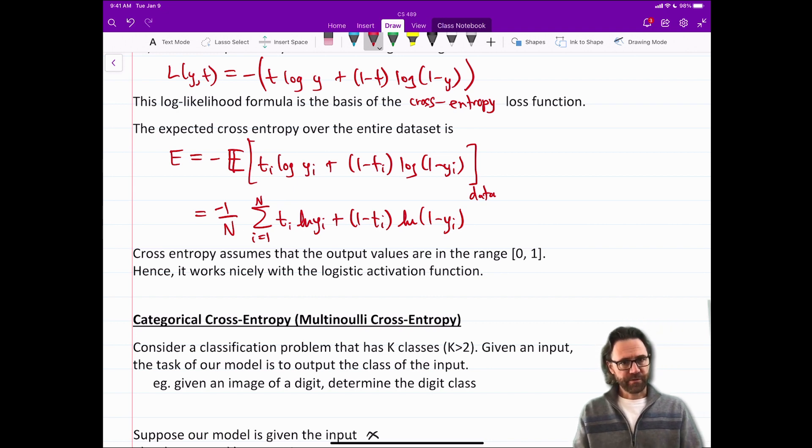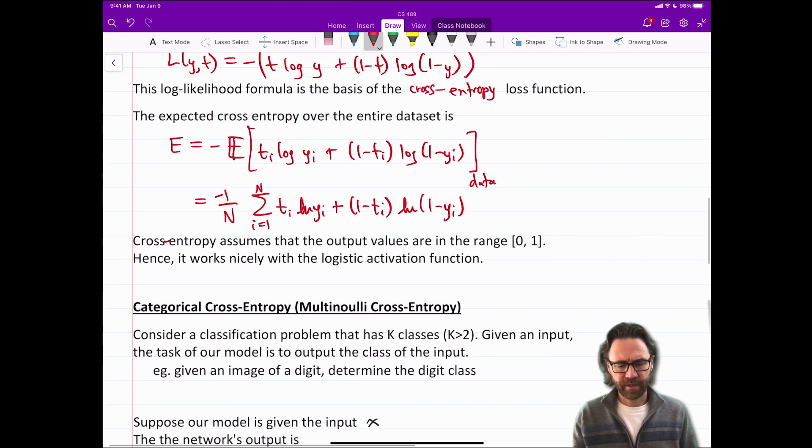So cross entropy assumes that the output values are in the range zero to one. So it works nicely with the logistic activation function. Remember logistic returns values between zero and one. So you'll see on the assignments and on the exercises how nicely those two fit together that logistic activation function with the cross entropy loss function.